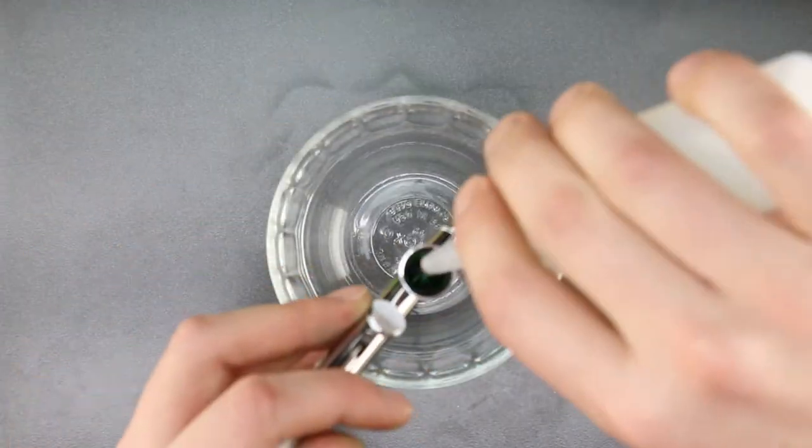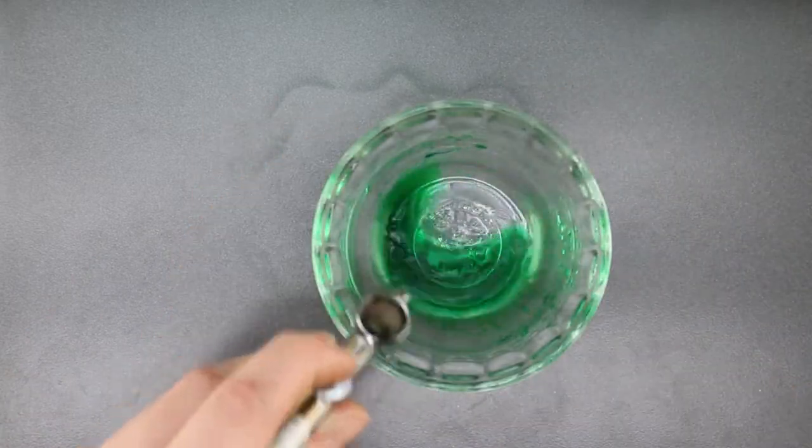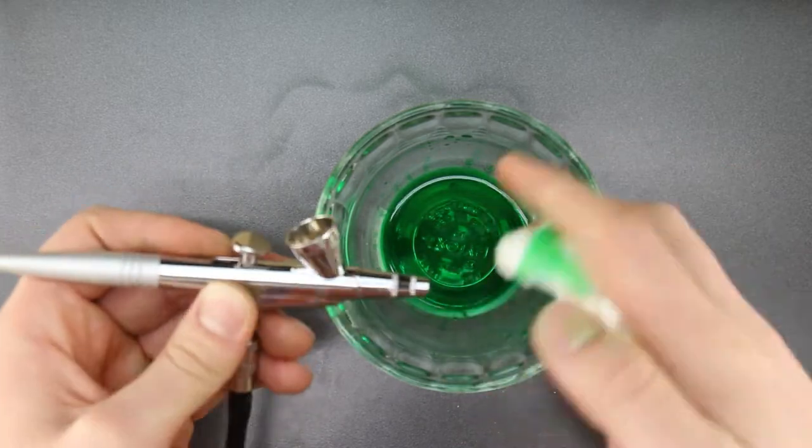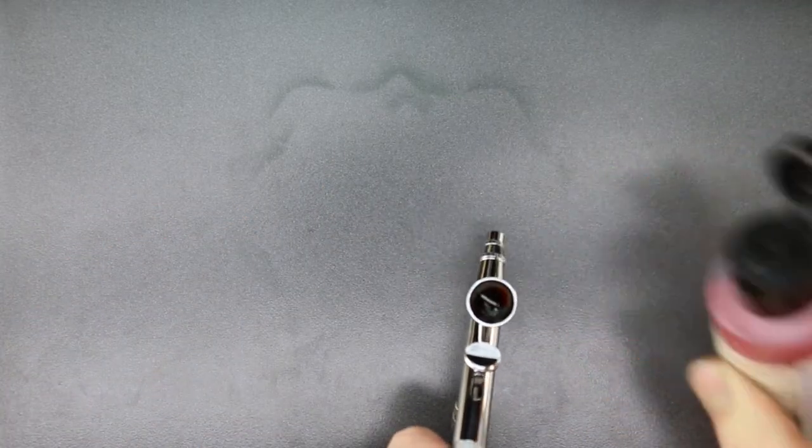Before adding orange food color to the airbrush, clear out the green using vodka. Wipe away any color from the tip, let the vodka evaporate, and add orange food coloring to the airbrush.